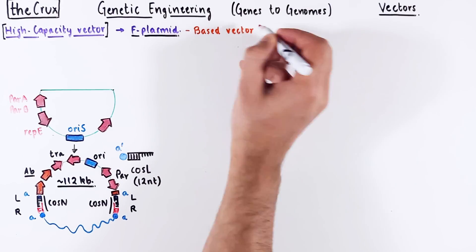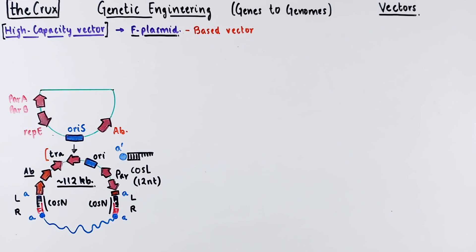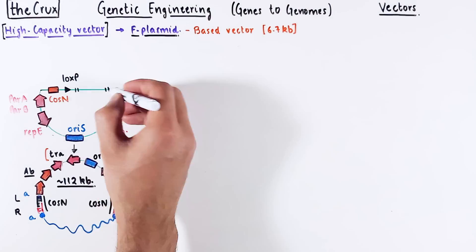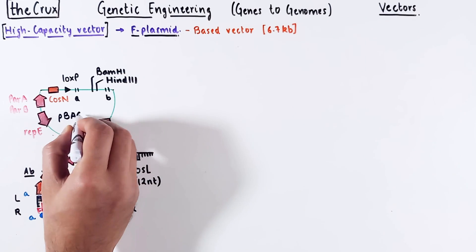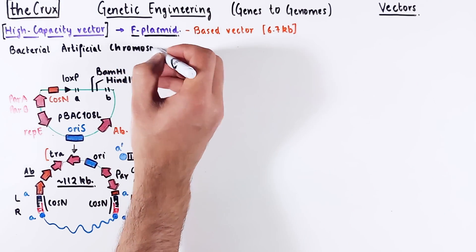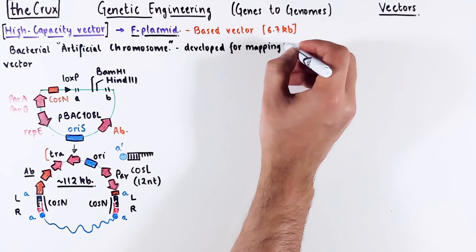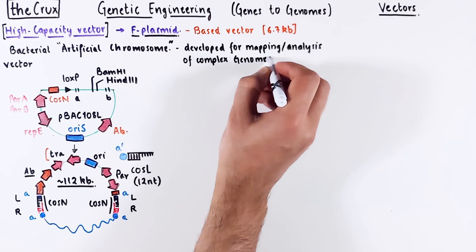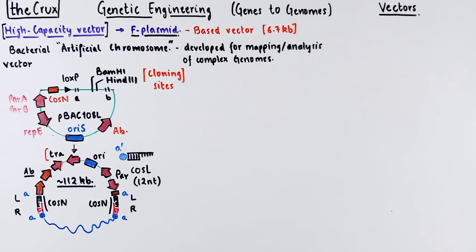The second F plasmid-based vector had the TRA genes taken out of the mini-F plasmid, reducing the size to only 6.7 KB. And instead of lacZ, you have cosN, loxP, and a bunch of restriction sites. This vector is called pBAC-108L — the first bacterial artificial chromosome. The name artificial chromosome doesn't mean it suddenly is a chromosome; BACs are still a vector. The name comes from the fact that it is purposefully made to map and analyze complex genomes. The cloning sites BamHI and HindIII are intended to insert large genomic chunks from eukaryotes.